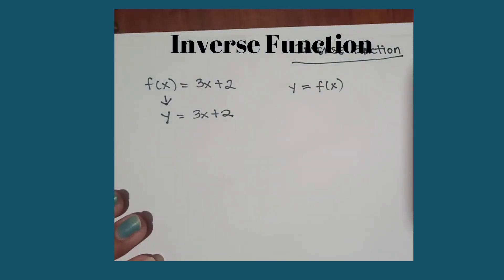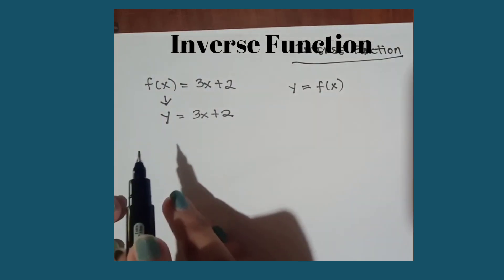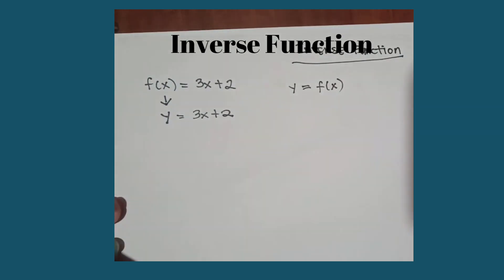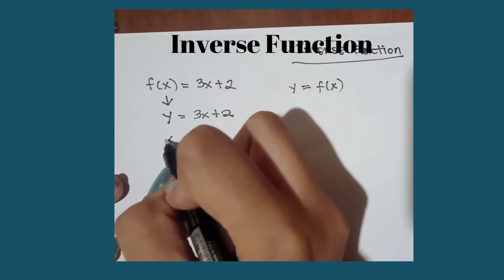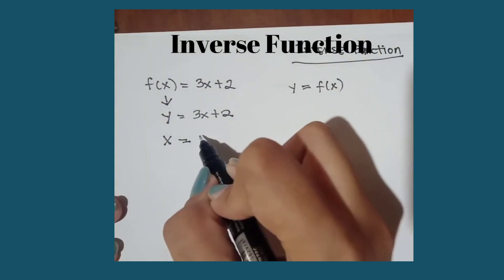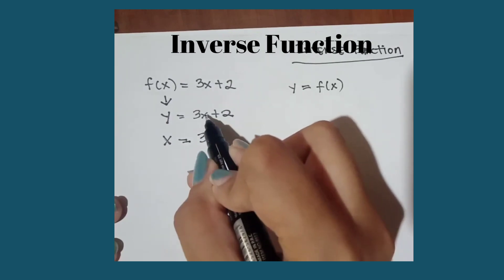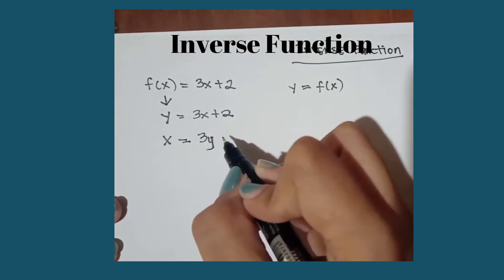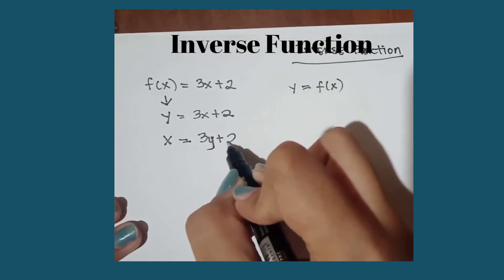Now we are going to interchange the variable of x and y. So we are going to interchange the position of this variable. So if this is your y, it will now become x. x is equal to 3y plus 2.